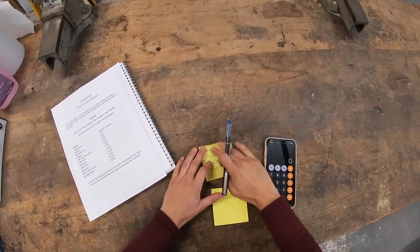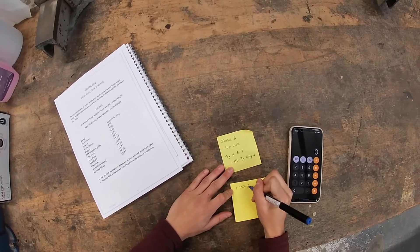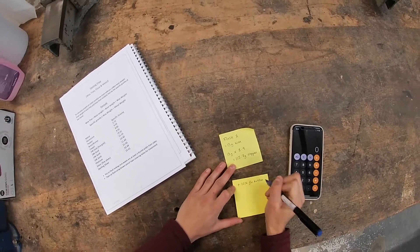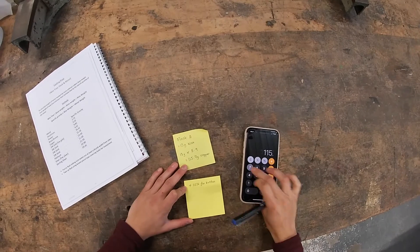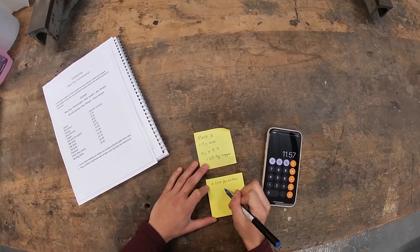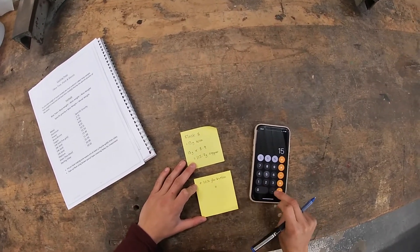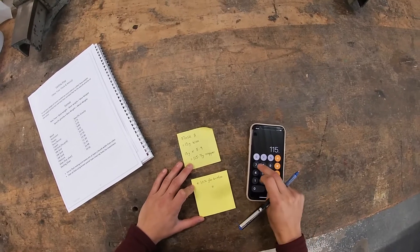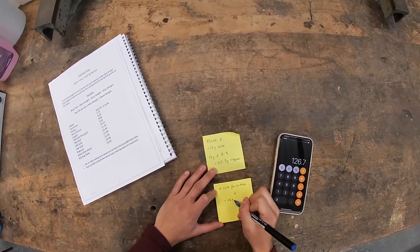Having calculated this figure, I then must add on 10% more to allow for the button. In this example, this will make the final weight of copper to be 126.7 grams.